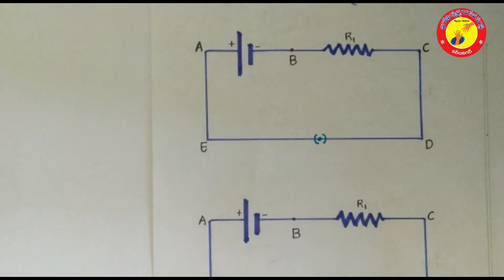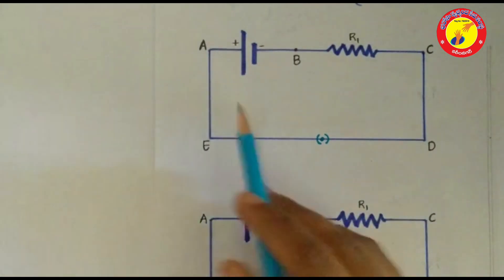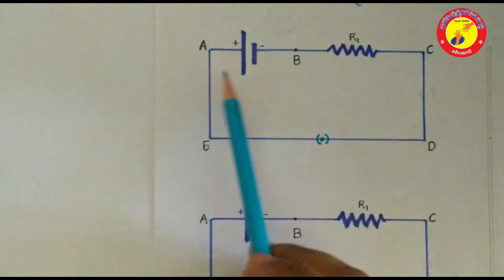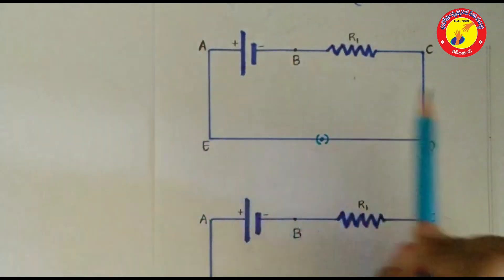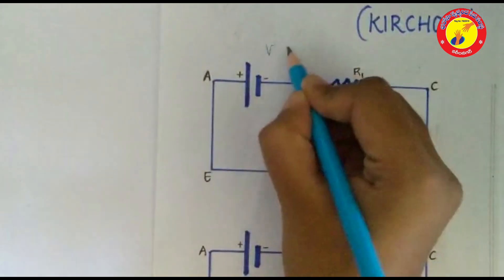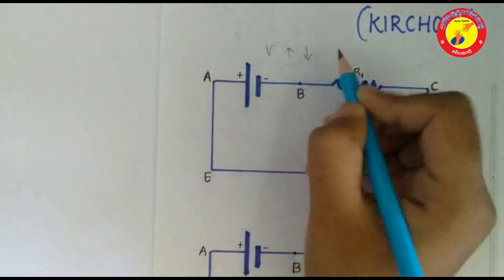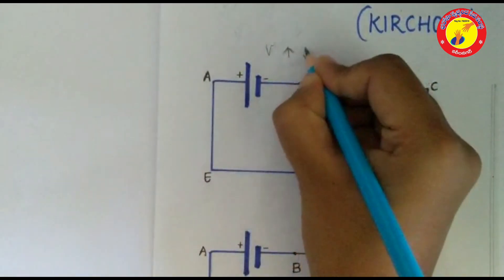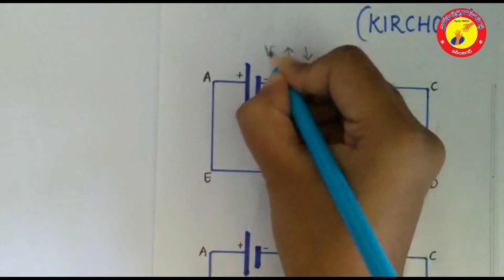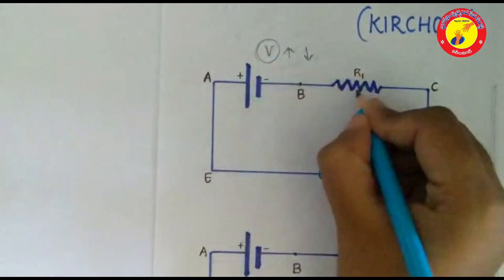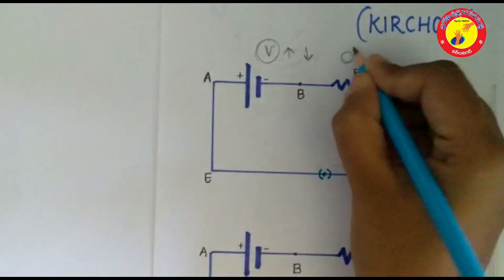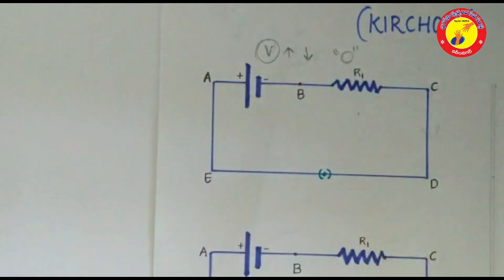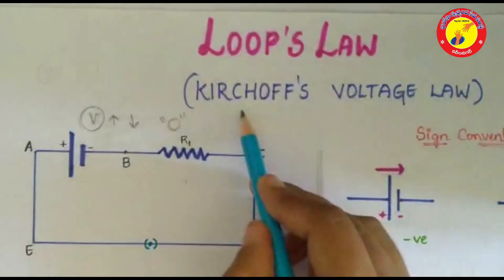Loop law. In a loop A, B, C, D, E, A, when we move across various components like battery, resistor, the potential difference may increase or decrease. The algebraic sum of these increases and decreases in potential difference across various components of a circuit in a closed circuit loop must be zero. This law is also called Kirchhoff's voltage law.